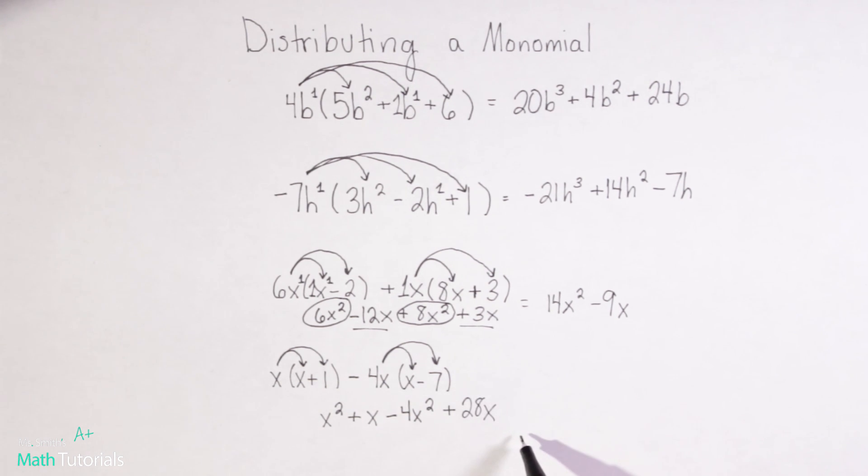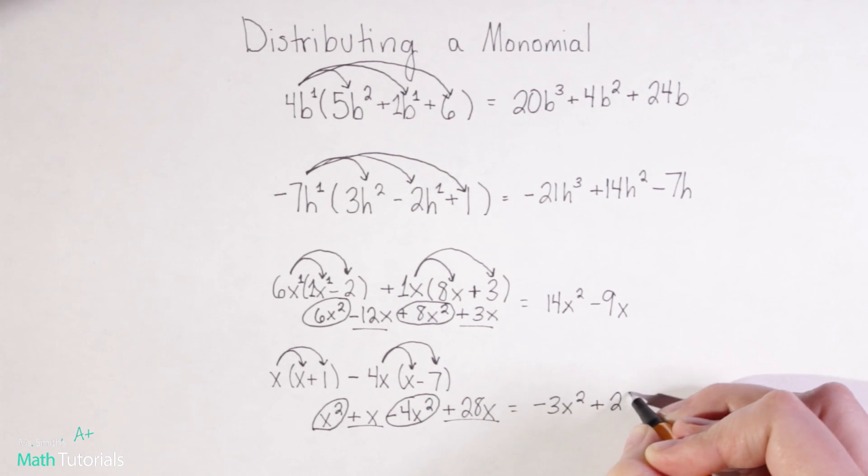So now I definitely see some like terms just like the last one that we need to combine. So I see an x squared and a negative 4x squared. Again that sign is so important. So 1 minus 4, there's that understood 1 in front there, so 1 minus 4 would be negative 3x squared. And then I've got a positive x and a positive 28x. So 1 plus 28 would be positive 29, and then just x.